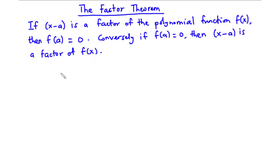Given a question like 'factorize completely the polynomial function f of x', we are going to test for the possible values of x that will make the polynomial function equal to 0. For instance, if substituting the value 1 into the polynomial makes it go to 0, then x minus 1 is a factor. To obtain the other factors, we divide f of x by x minus 1.